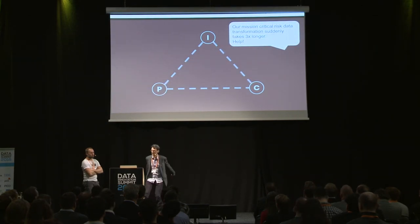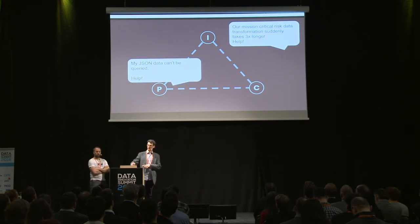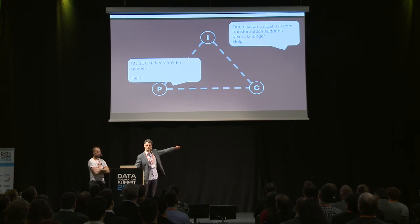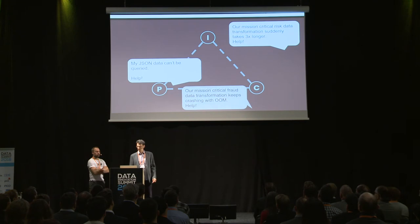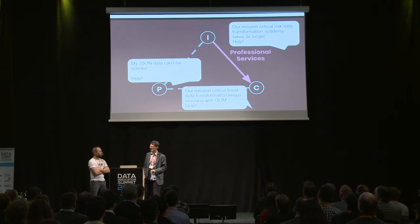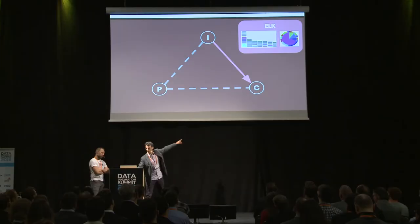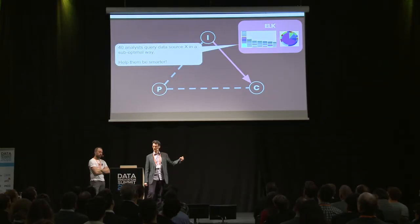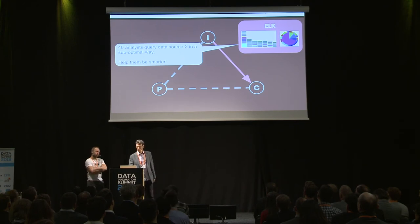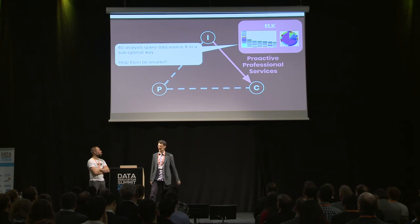Things get interesting when a job takes three times longer than usual, a data producer finds their JSON can't be queried anymore, or a mission-critical fraud transformation fails. We realized we need professional services from the data infra team: currently two data engineers help with these hairy, potentially business-critical fringe cases. We also build tooling to enable proactivity — for example, discovering that 40 analysts are querying a certain data source in a suboptimal way, so we can group them together and help them be smarter. We call this proactive professional services.